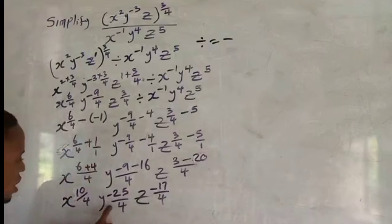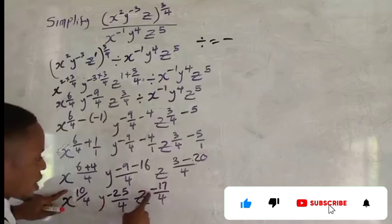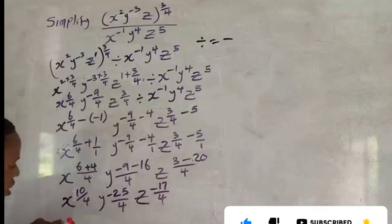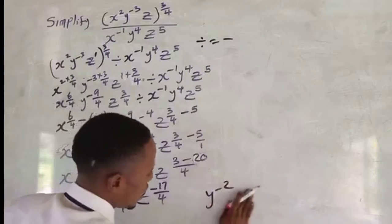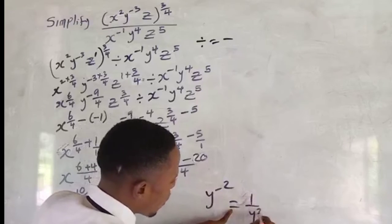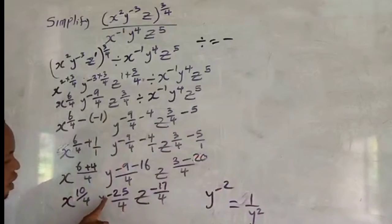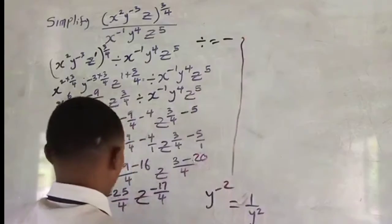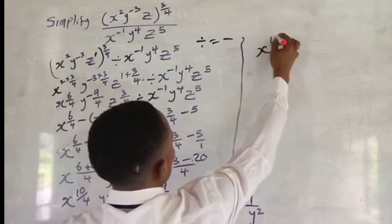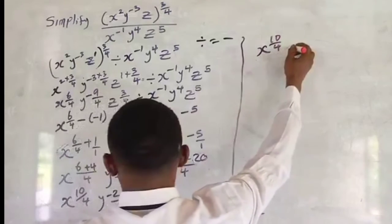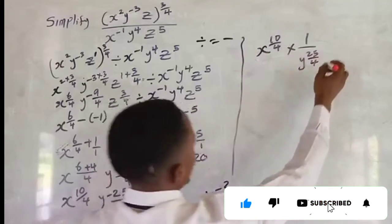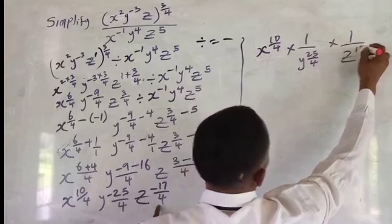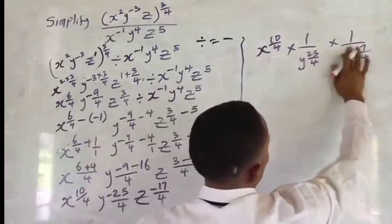Now we apply the negative index rule: if you have x raised to power minus n, that equals 1 over x raised to power n. So the terms with negative exponents move to the denominator. The y and z terms carry negative powers, so they move down. We get s raised to 10 over 4, multiplied by 1 over y raised to 25 over 4, multiplied by 1 over z raised to 17 over 4.